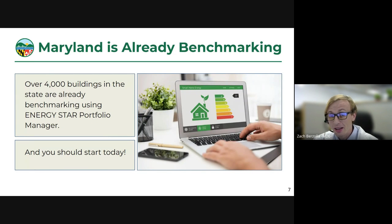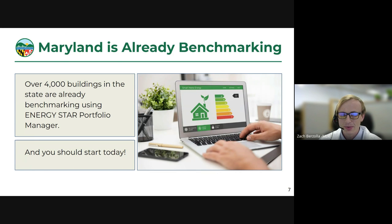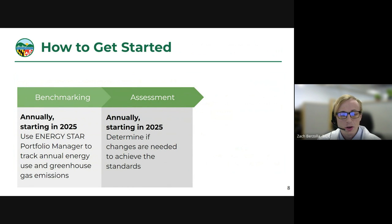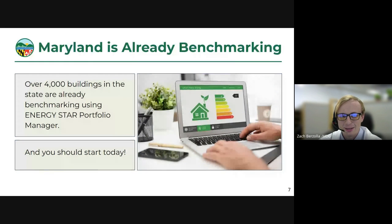A lot of folks across the state are already doing this. Our current estimate is there are about 9,300 covered buildings in the state, and almost half of those buildings are already benchmarking. But if you're new, that's okay — you've got time. Now is the best time to start figuring out how to use Portfolio Manager. If you want to apply for exemptions that we allow for in BEPS, you can do that as well, but that's a separate working group and webinar that we'll come to at another time.